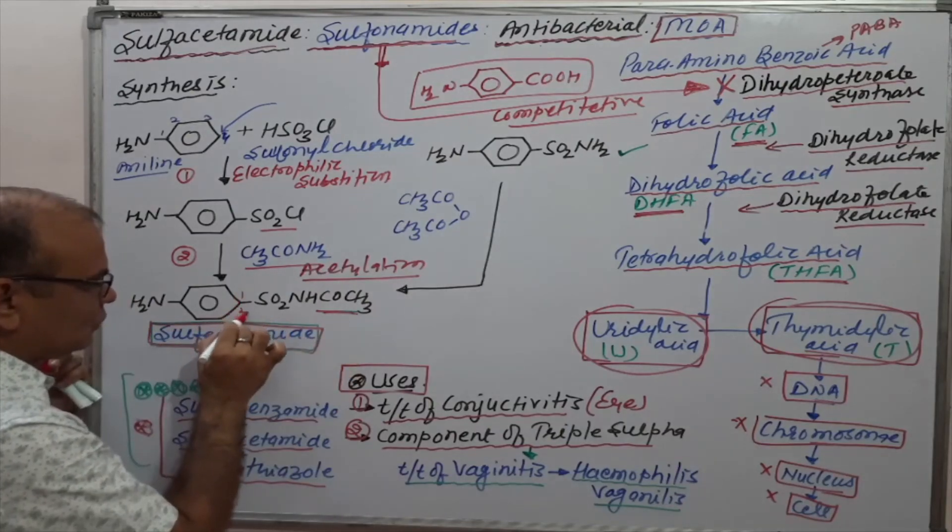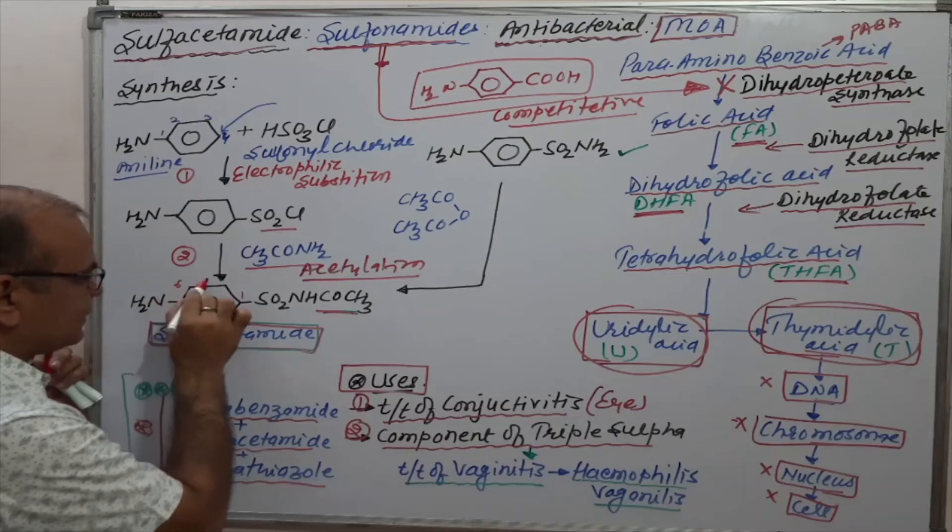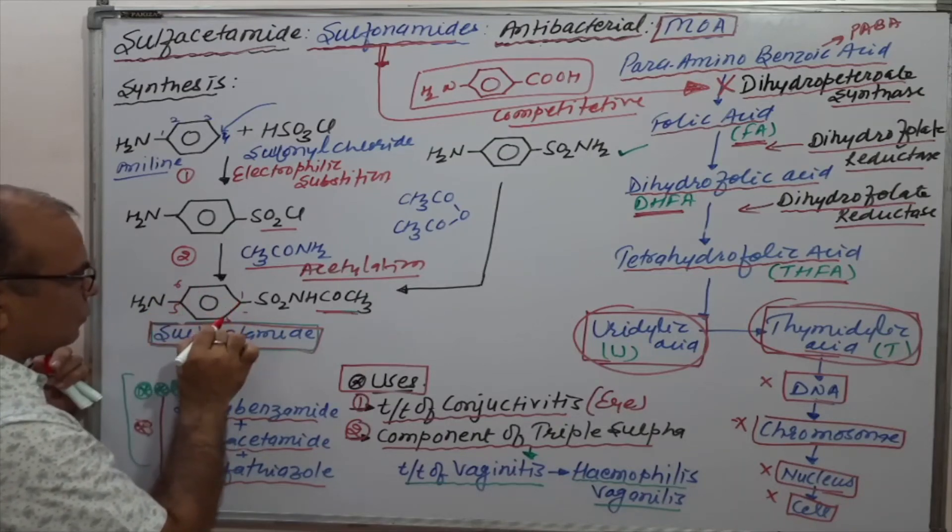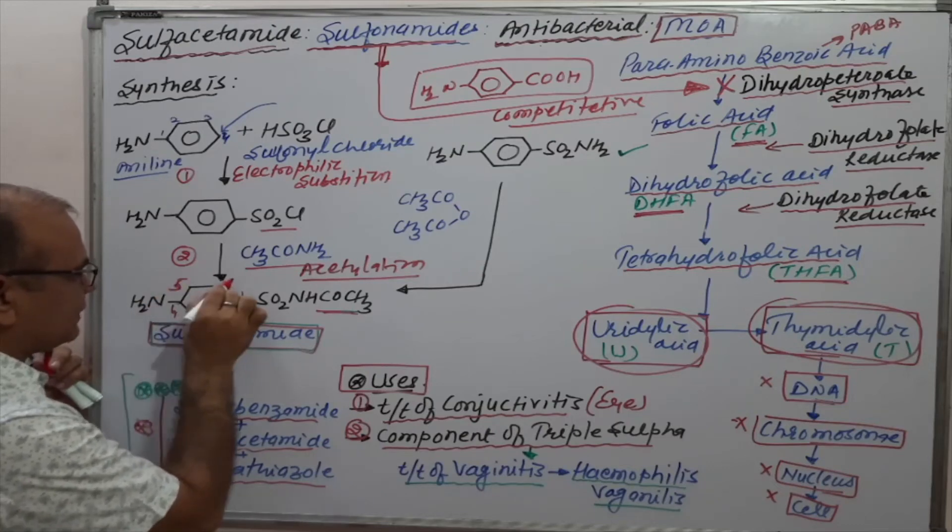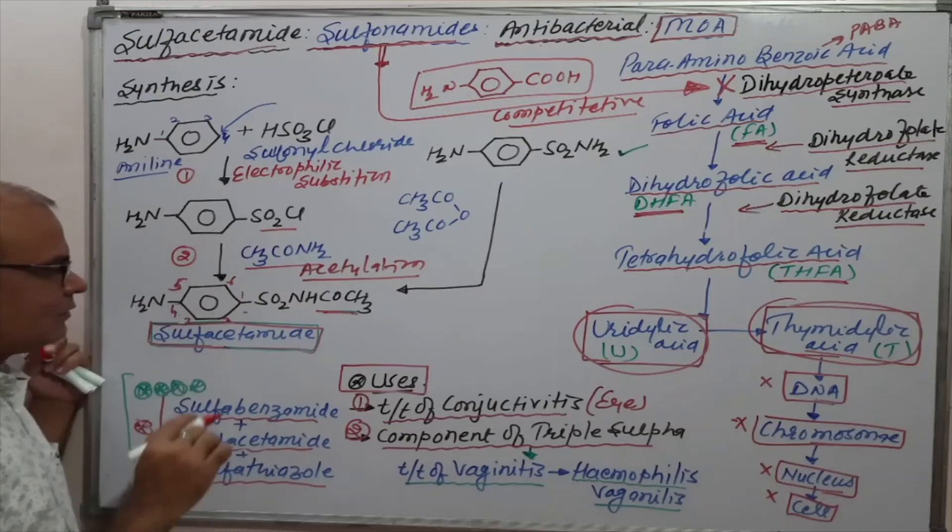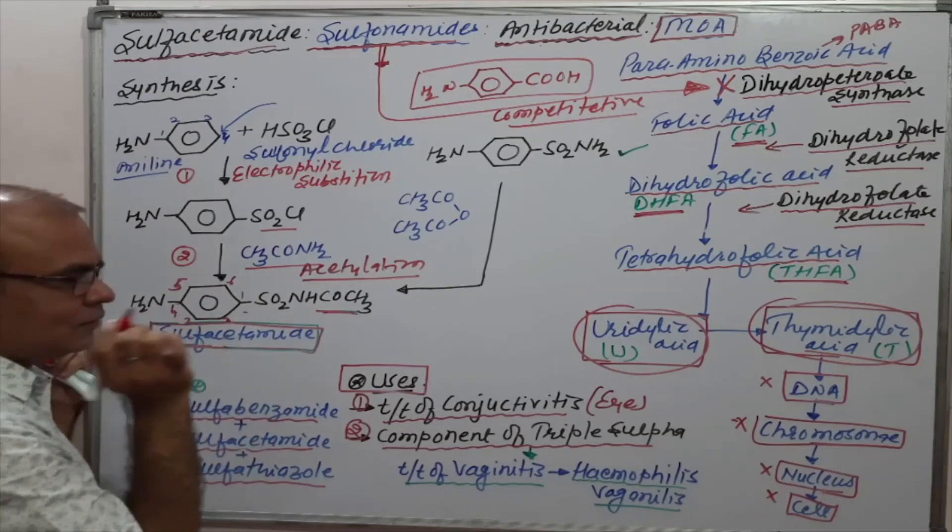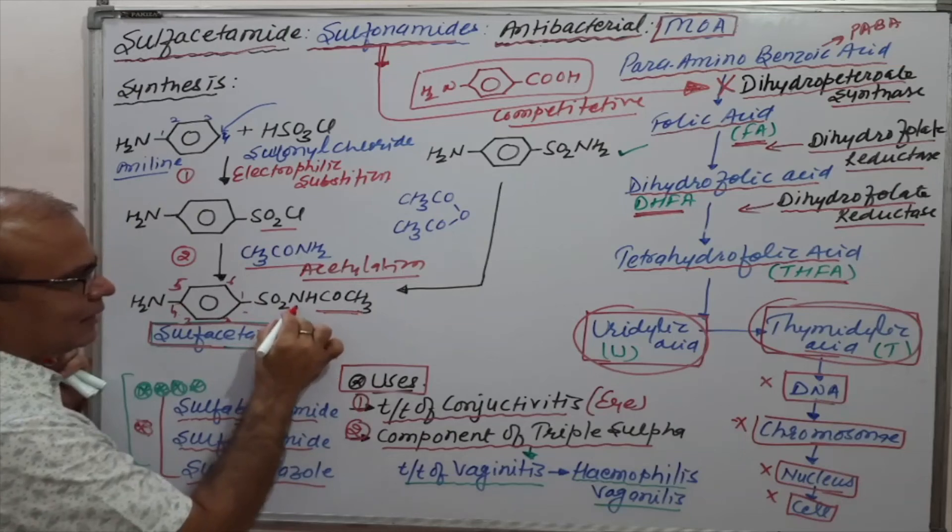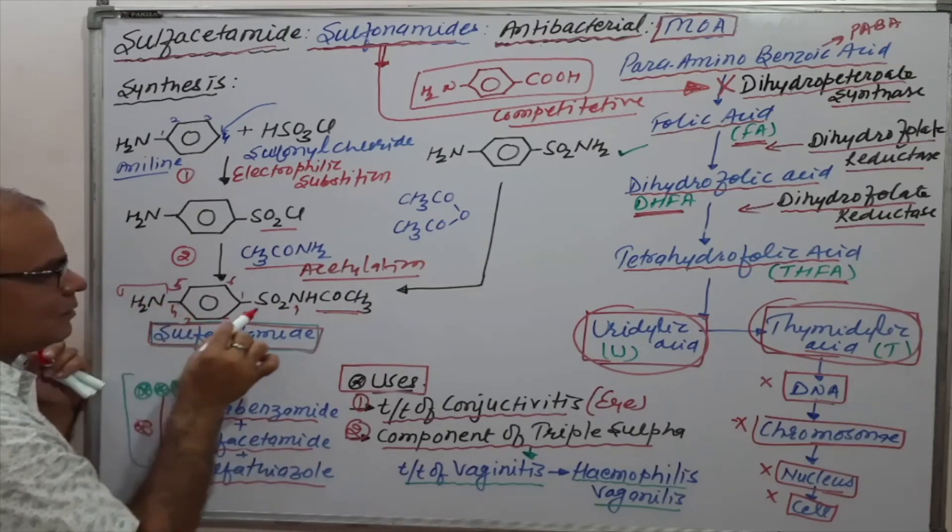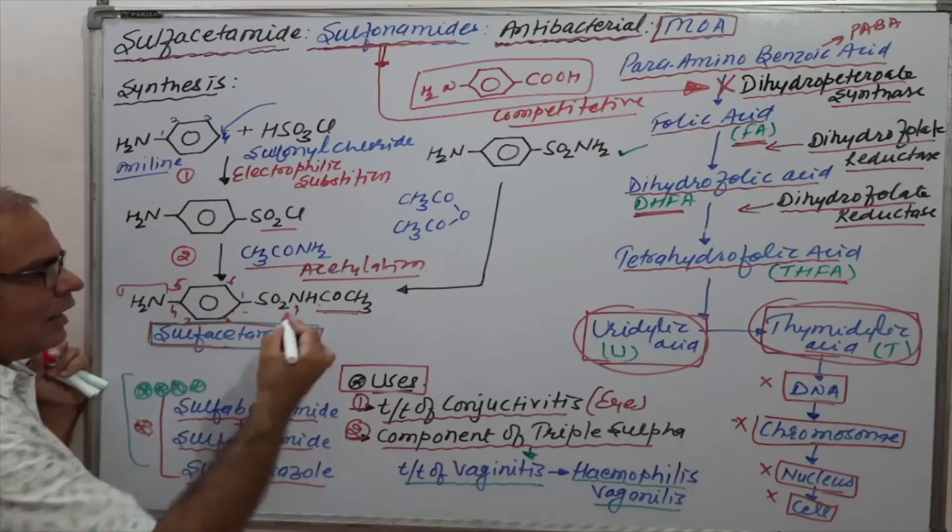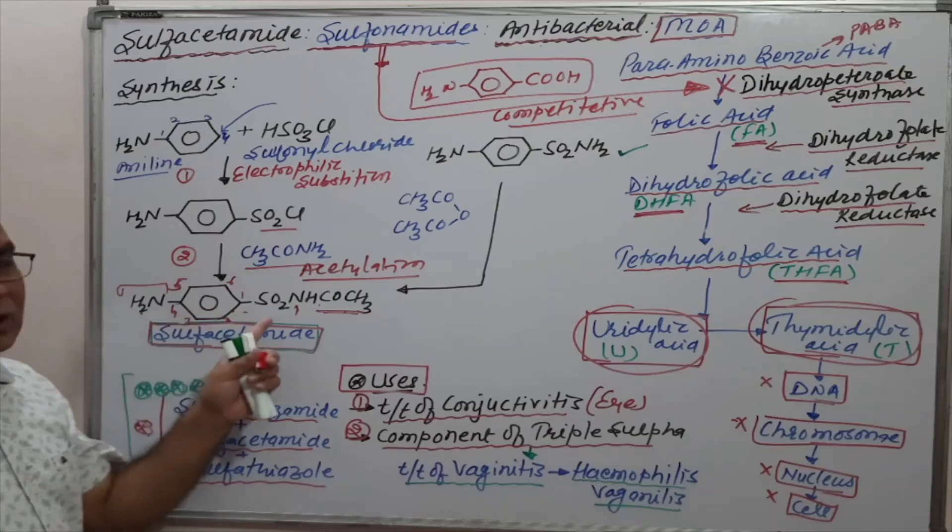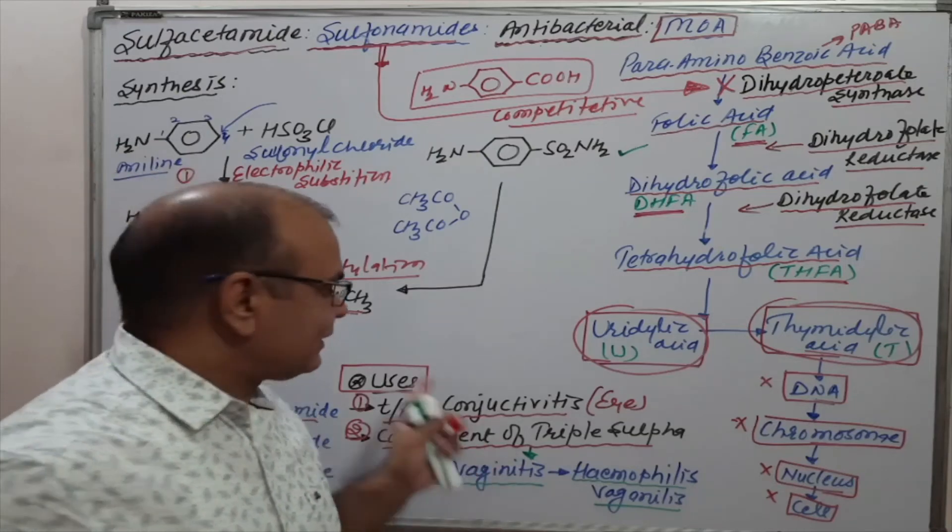We can give the numbering of sulfacetamide as one, two, three, four, five, and six. How we can give the IUPAC name? The acetyl part at position nitrogen, this amino group, means benzene sulfonamide will be suffix. Acetyl para-amino benzene sulfonamide is the IUPAC name of sulfacetamide.